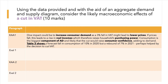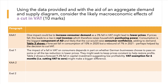However, the impact of a fall in VAT on consumers depends in part on whether German businesses choose to pass on some or all of the tax reduction. VAT is a tax on suppliers, and businesses might seek to keep their prices relatively constant to help restore profits, since they now pay less VAT. Table two shows a forecast fall in investment of nearly 10%, suggesting low profitability. A cut in VAT to zero for six months might make a bigger difference, as a 3% fall in VAT is unlikely to have much effect on consumer prices.